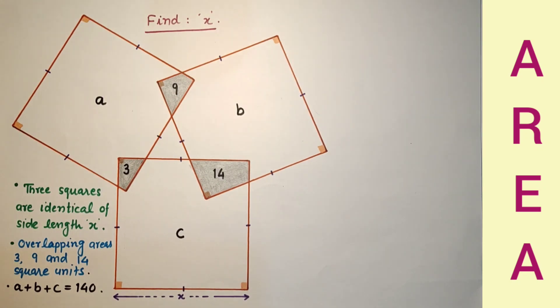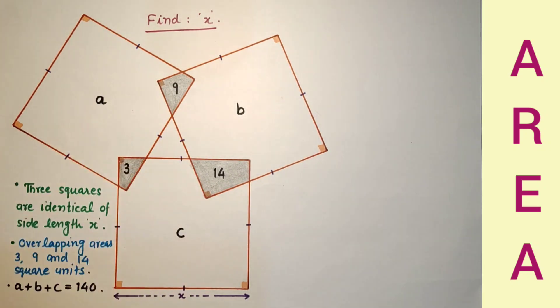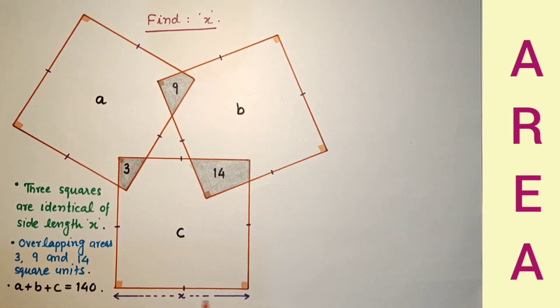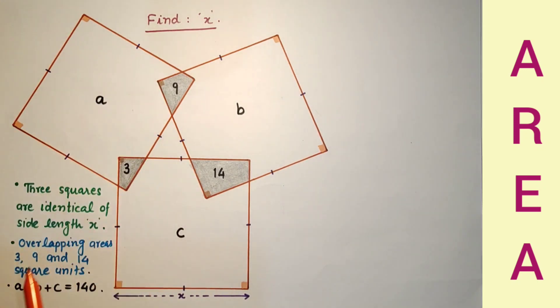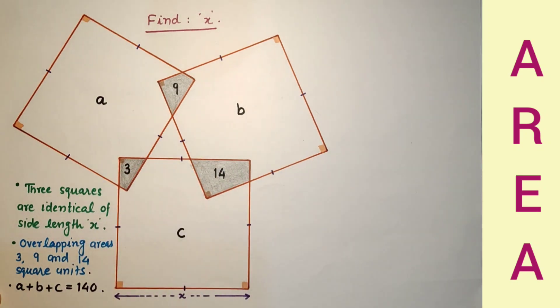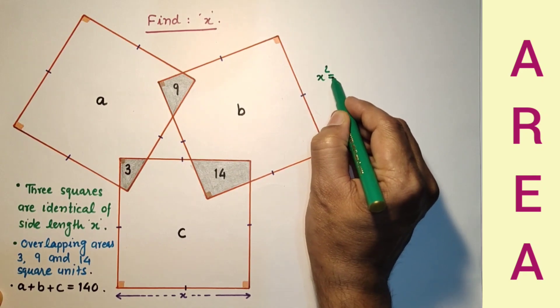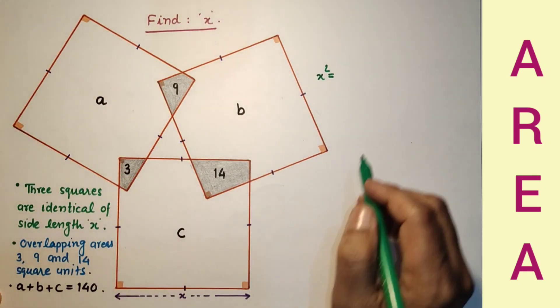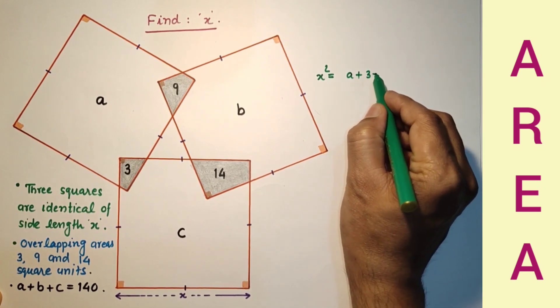The question is simple but interesting. Since area of the square is side squared, and each side is x units, this square's area equals x squared, which equals A plus 3 plus 9. So the area of the square is A plus 3 plus 9.